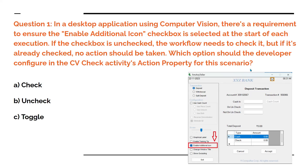Now let's see the very first question. This question we have already seen in my previous video where I've explained practically. In a desktop application using computer vision, there is a requirement to ensure the enable additional icon checkbox is selected. At the start of each execution, if the checkbox is unchecked, the workflow needs to check it. But if it is already checked, no action should be taken. Which option should the developer configure in the CV check activity's action property for this scenario?